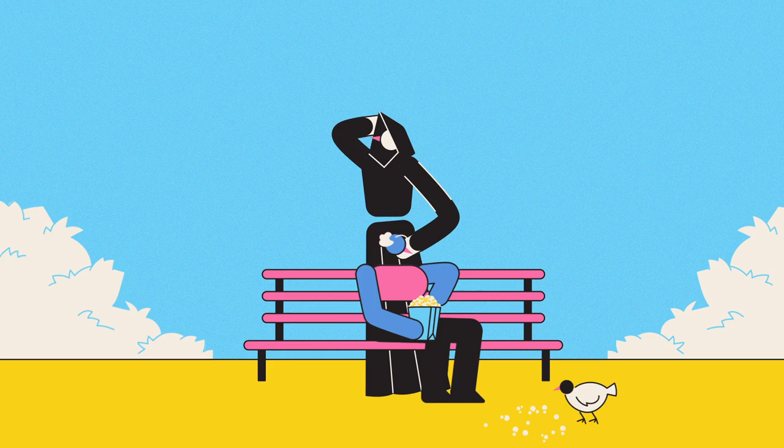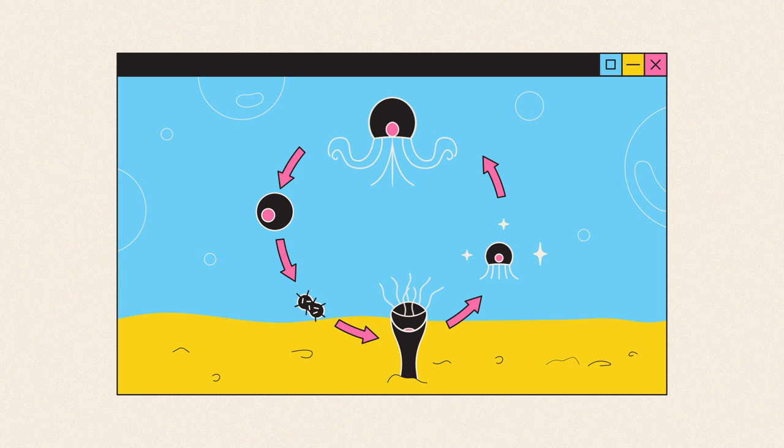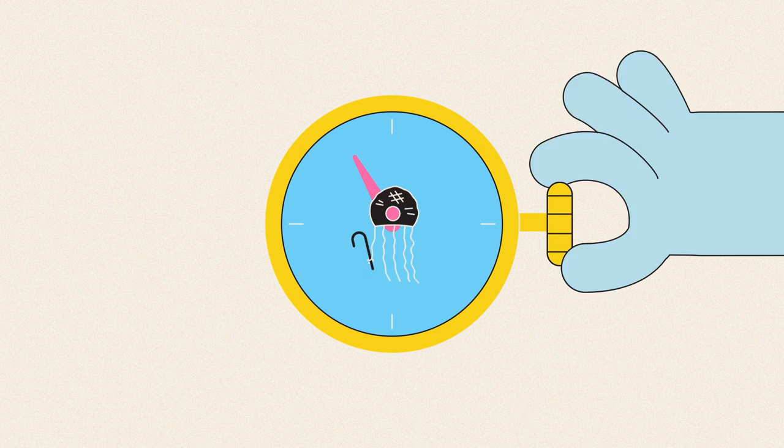Take, for example, Turritopsis dohrnii, better known as the immortal jellyfish. This tiny tropical sea beast, having progressed through the stages of its life cycle, has the amazing ability to then loop back to the start. Resetting its biological clock again and again to become, well, immortal.